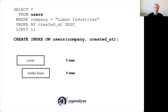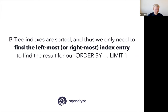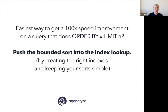The alternative is that if you have an index on (company, created_at), Postgres can directly get one row from the index. This is an amazing performance difference — looking at 1 row versus 100,000 rows. This only works with btree indexes because they are sorted. If you have the order column in the index, Postgres only has to find the leftmost or rightmost index entry to fulfill the ORDER BY LIMIT. This bounded sort — moving the ORDER BY LIMIT into the index lookup — can give you amazing performance improvements. You achieve it by creating the right indexes and keeping your sorts simple.